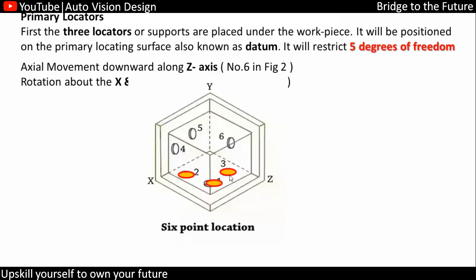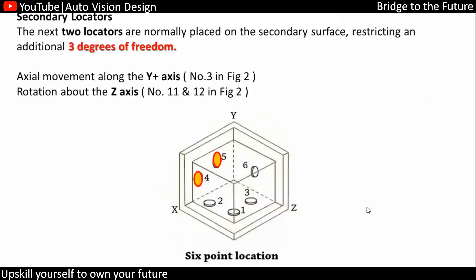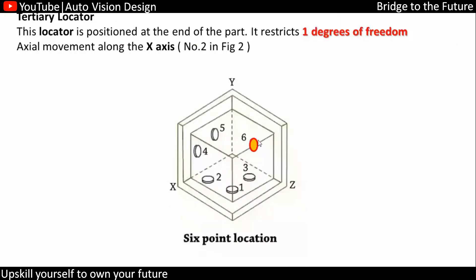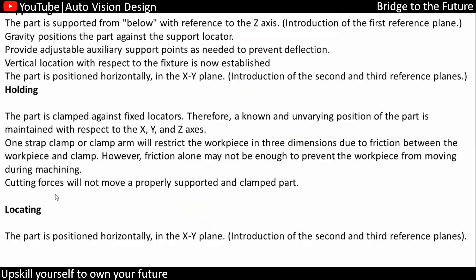If we add 3 points on the bottom, 5 degrees of freedom will get restricted. If we add 2 points on the side, 3 degrees of freedom will get restricted. And if we add 1 point here, you can imagine the part is not going inside, so 1 degree of freedom is restricted. So after 12, a total of 9 degrees of freedom will get restricted. The 3-2-1 principle is required for supporting, holding, and locating the part.